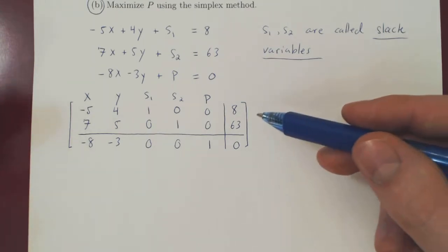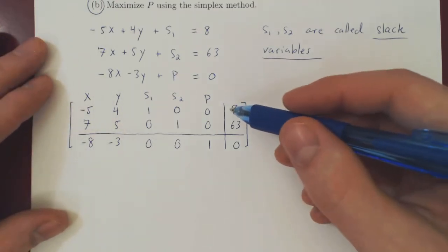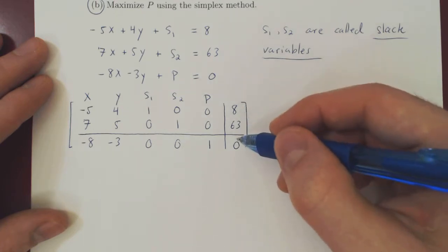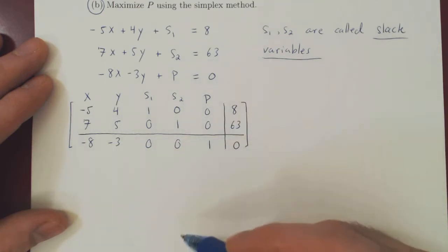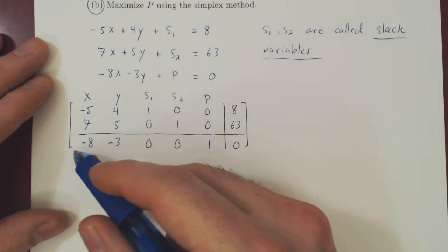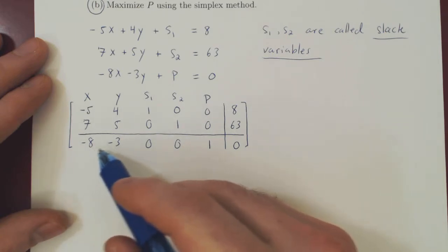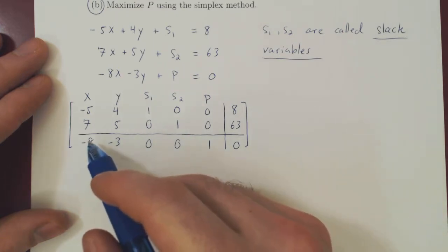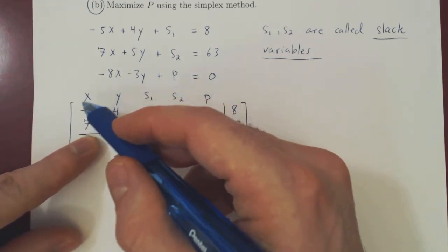The question is, how do we transform this matrix in order to obtain the optimal solution? What we'll do looks a little bit like row reduction, but not exactly. There are some really key differences. If you look at your bottom row, there are two negative entries. We will reach the maximum possible value of P once there are no more negative values in the bottom row. There may be zero entries, not a problem, but we have to find a way to eliminate the negative entries.